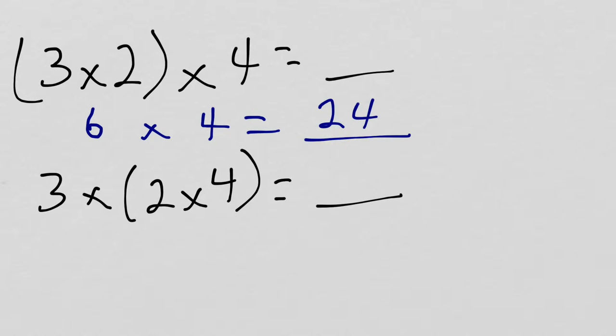Now here, I do parentheses first. So 2 times 4 equals 8, and I have to multiply that by 3. So 3 times 8, I'm going to count by 8's. 8, 16, 24.